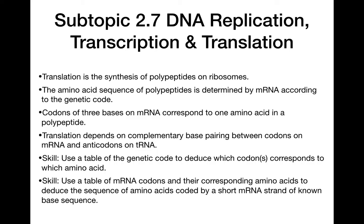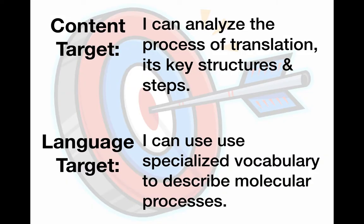Our learning targets are: I can analyze the process of translation, its key structures and steps, and the language target is I can use specialist vocabulary to describe molecular processes. Just like with replication and transcription, there's a bunch of steps you need to know here. There are lots of similarities, so that will help you remember — but be careful to keep in mind the function of these processes, because it's going to be very easy to mix up the three of them.